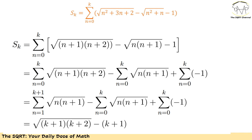Now let's focus on the first two terms. The general term of these two sigmas is identical — the only difference is the range. The first goes from 1 to k+1, the second from 0 to k, so the middle terms cancel. We are left with the last term of the first sigma, which is √((k+1)(k+2)), and the first term of the second sigma, which is √(0·1) = 0.